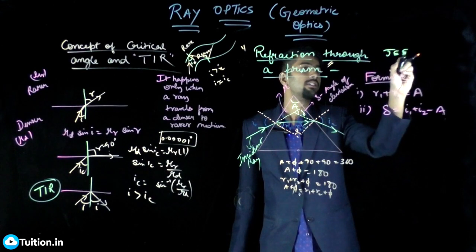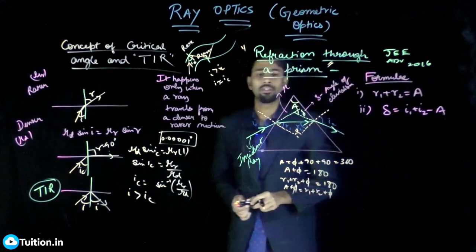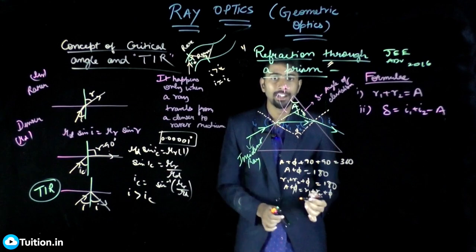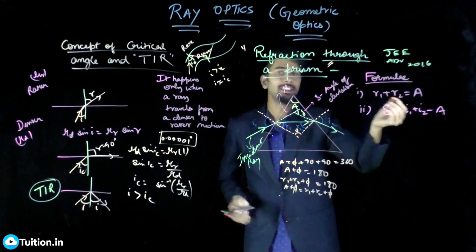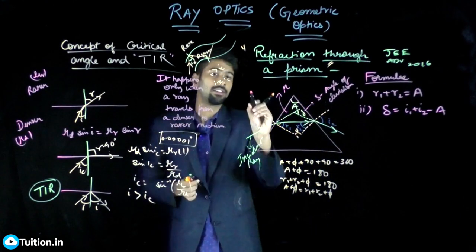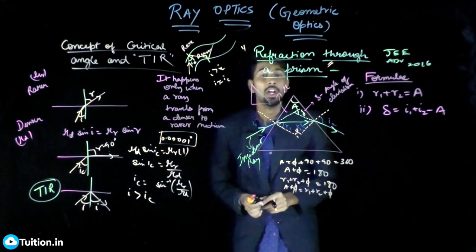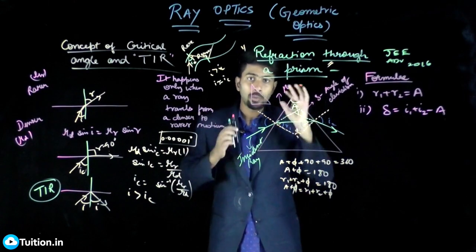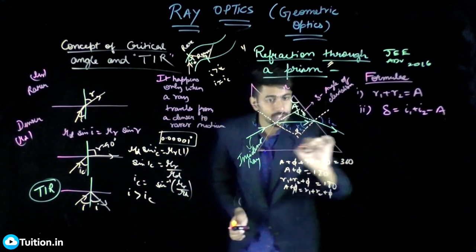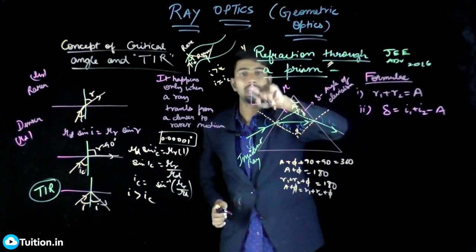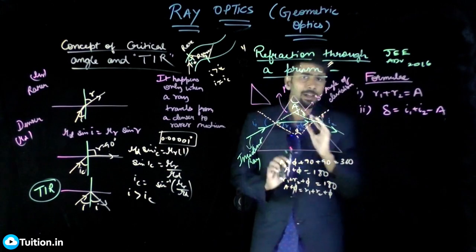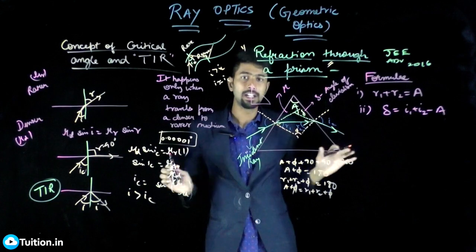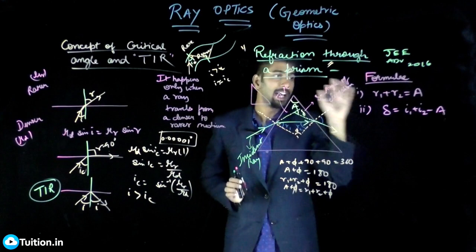In JEE Advanced 2016, there was a question on prism refraction where A = r1 + r2 was not obeyed. Remember, this is not a universal law — it comes from geometry. If the geometry of the prism is such that this condition cannot hold, it will not hold. In that question the prism had a different geometry and the ray was incident at a different angle, so this relation was not valid. For standard prisms and typical incidence angles you can use it, but for unusual cases you must solve using geometry directly.